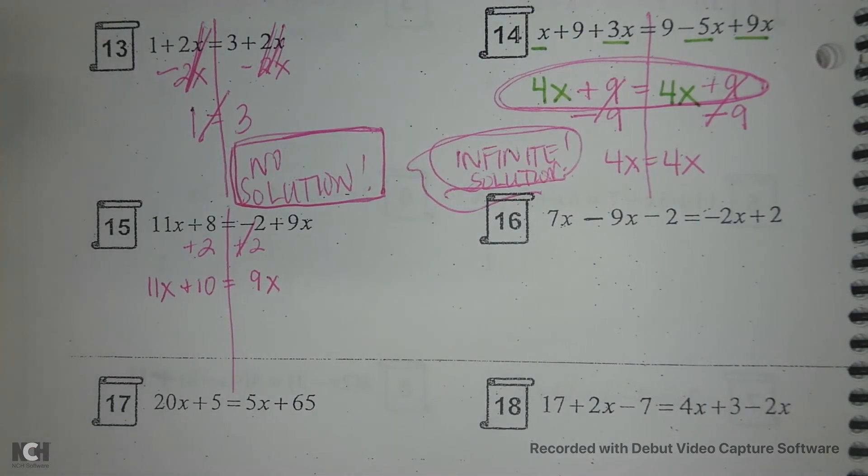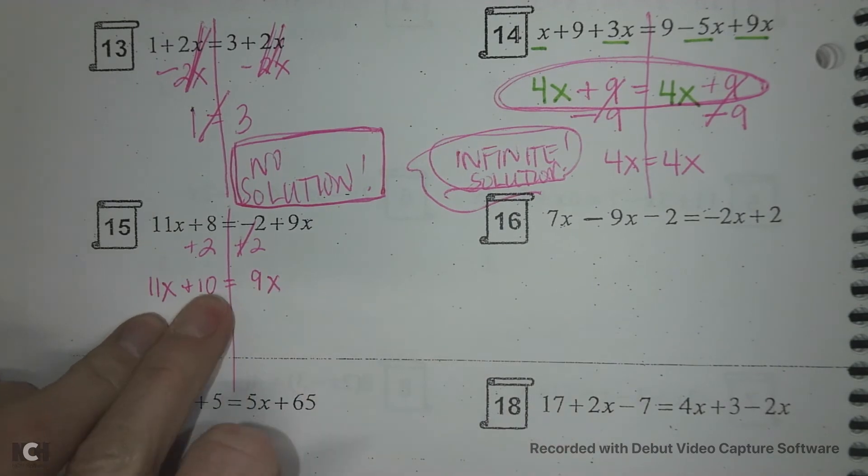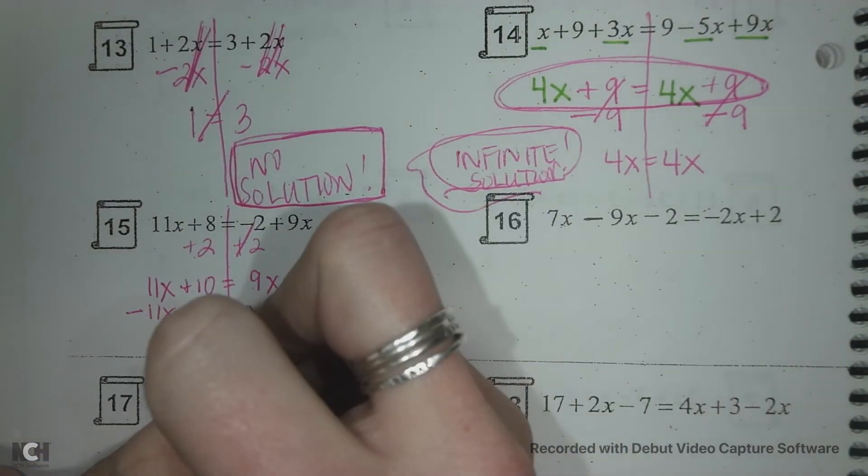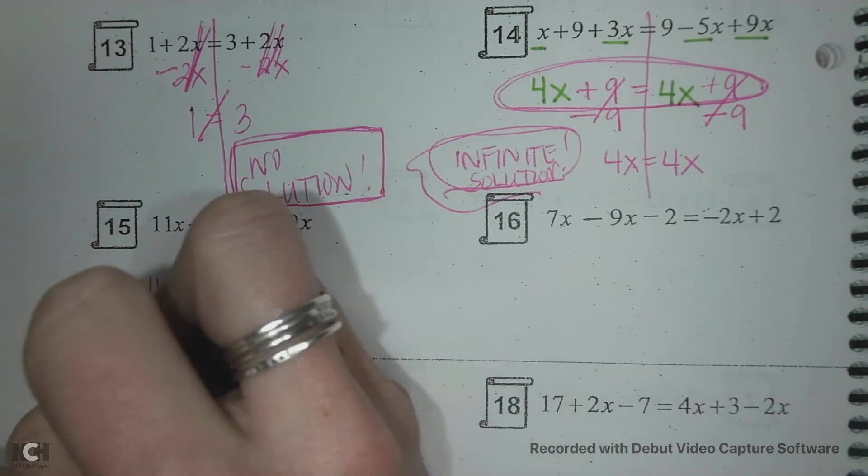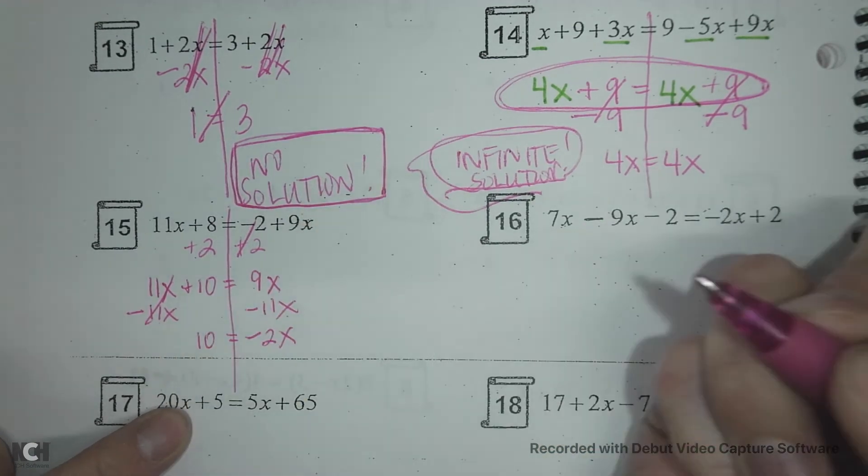Okay. Now I need to get my numbers together or my letters together because my number is all alone. So I'm going to do the opposite of add 11x which is minus 11x.